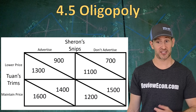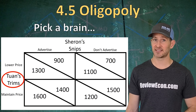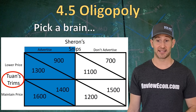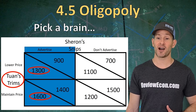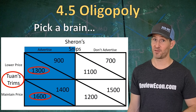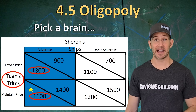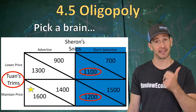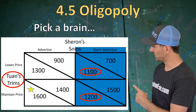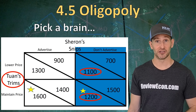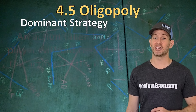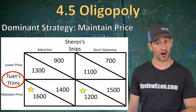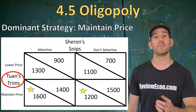In order to figure out what's likely to happen, we're going to solve this payoff matrix. The first step is to pick a brain — we'll start with Twan's Trims. Twan needs to think about what Sharon might do. If Twan thinks Sharon might advertise, Twan's Trims is choosing between $1,300 profit and $1,600 profit — $1,600 is clearly better, so we put a star there. If Sharon doesn't advertise, Twan's Trims is deciding between $1,100 profit and $1,200 profit — $1,200 is clearly better. This tells us that Twan's Trims' best move is a dominant strategy. A dominant strategy is an action that will be taken by a player without regard to the actions of the other player. Since Twan will maintain price regardless of what Sharon does, Twan's Trims has a dominant strategy of maintaining price.